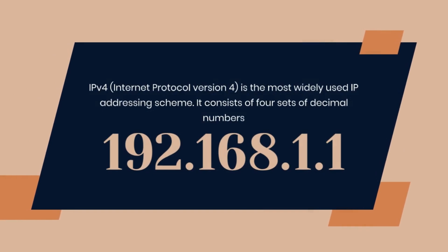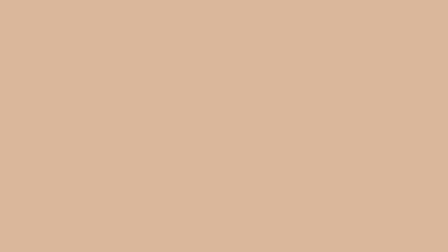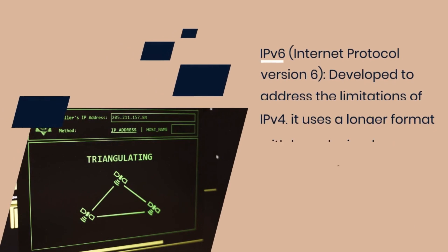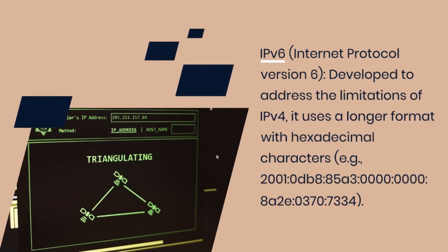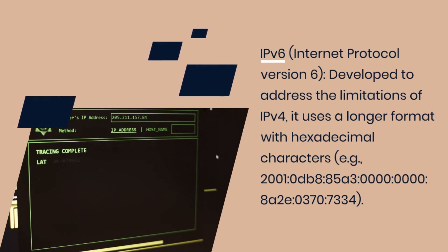IPv4 (32-bit) and IPv6 (128-bit) are the two prevalent versions of IP addresses. IPv4 is the most widely used IP addressing scheme and consists of four sets of decimal numbers. IPv6 was developed to address the limitations of IPv4 and uses a longer format with hexadecimal characters.